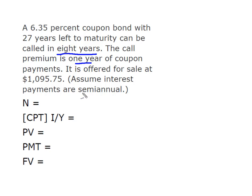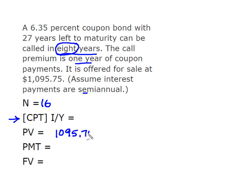We assume semi-annual payments. We base this off of the call, so that's going to be 16 payments. We're going to compute the I/Y. Our present value is simply what it's currently offered for sale at, and don't forget to put that in as a negative in your calculator or you'll get error 5.